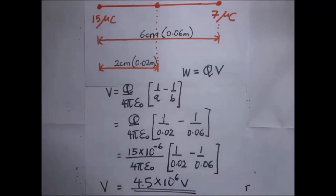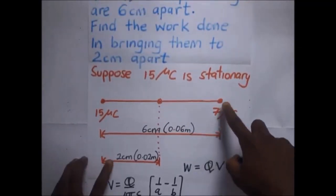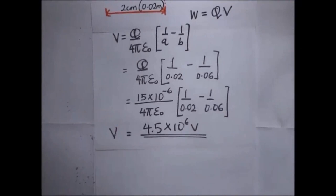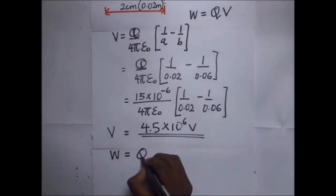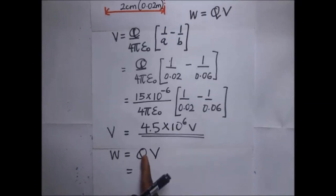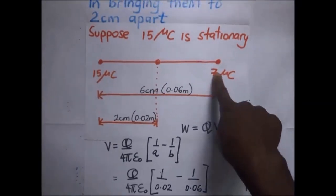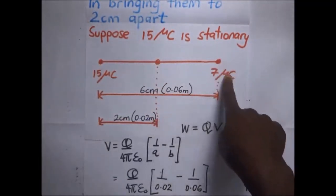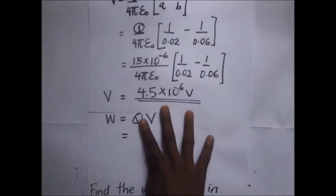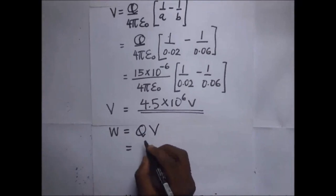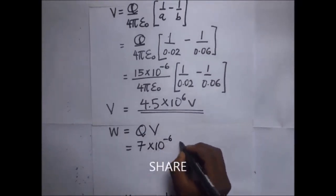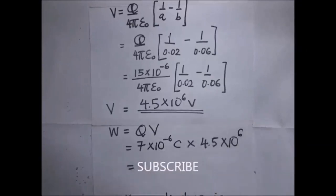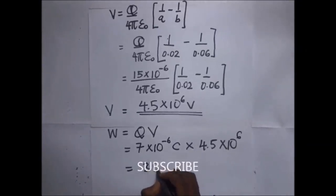Now to find the work done: W = qV, where q is the charge that is moving — which is 7 microcoulombs, equal to 7×10⁻⁶ coulombs — multiplied by the potential difference of 4.5×10⁶ volts. Our answer is 31.5 joules. That is the work done in moving the 7 microcoulomb charge from 6 centimeters to 2 centimeters apart.